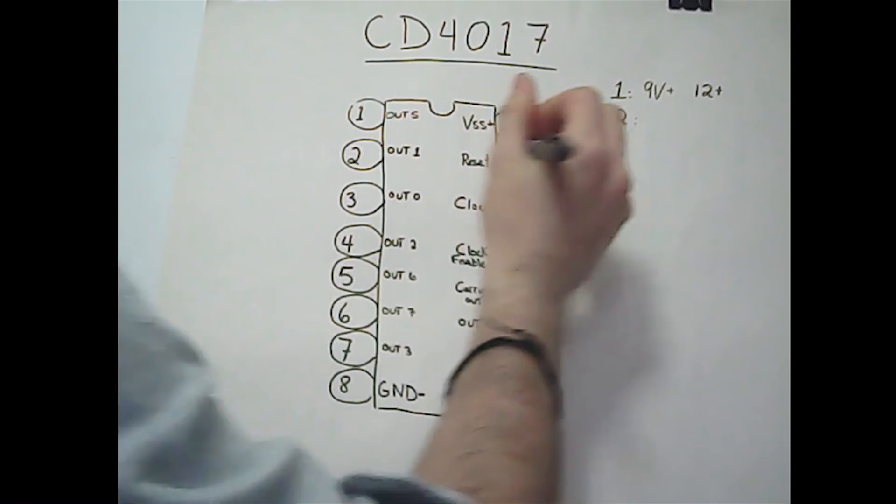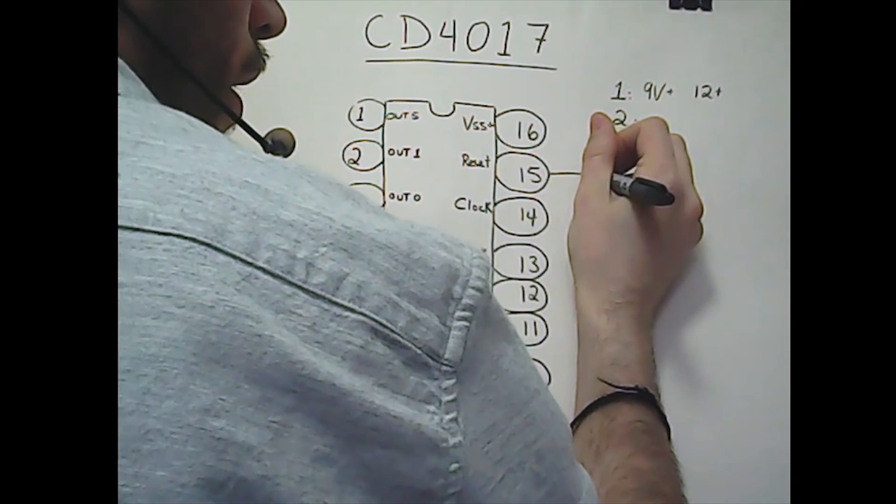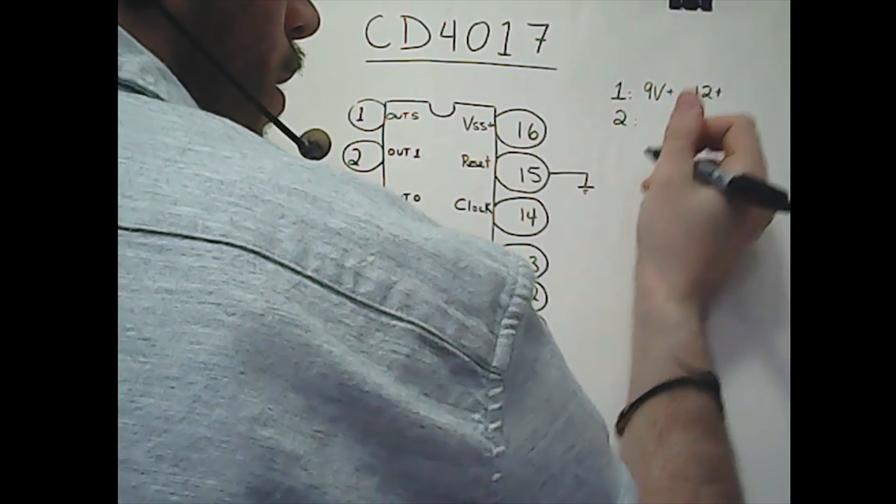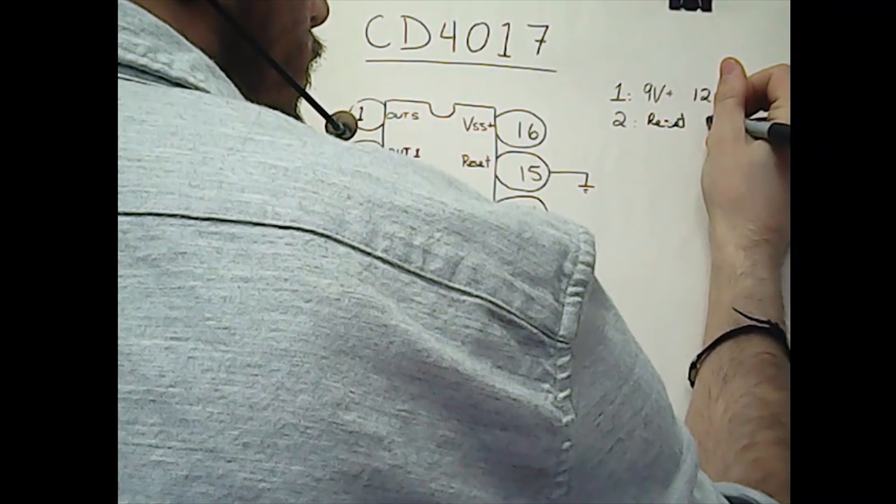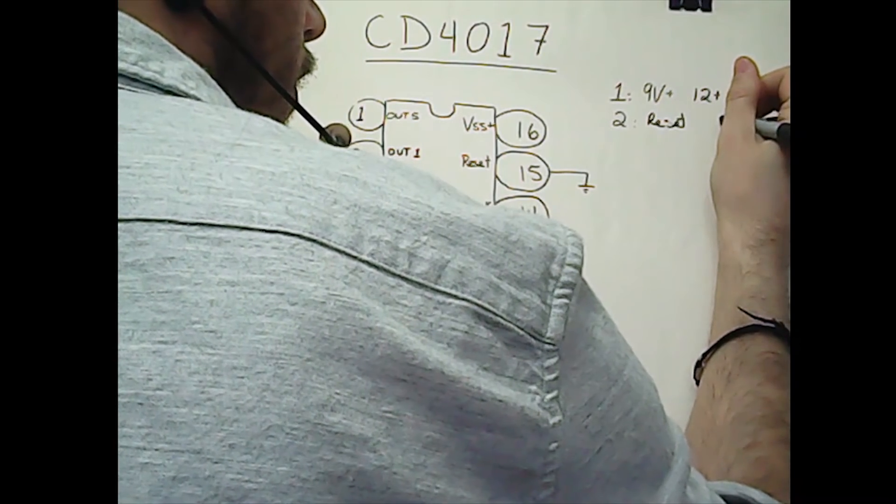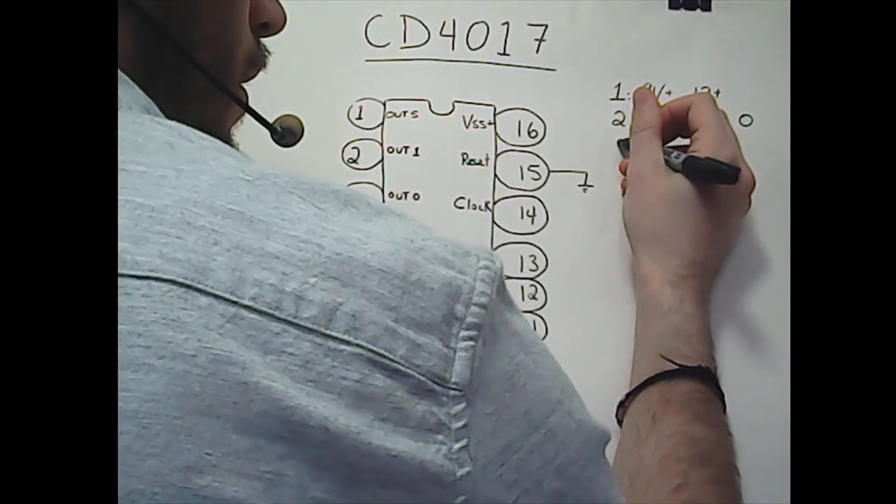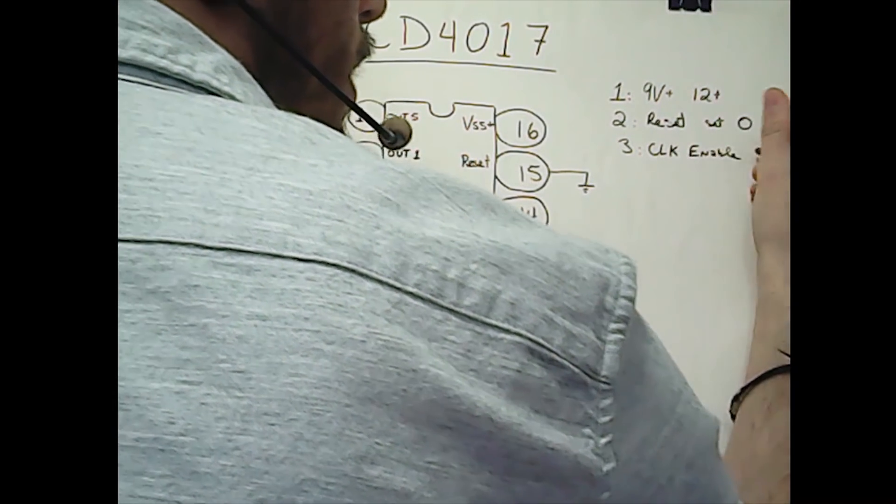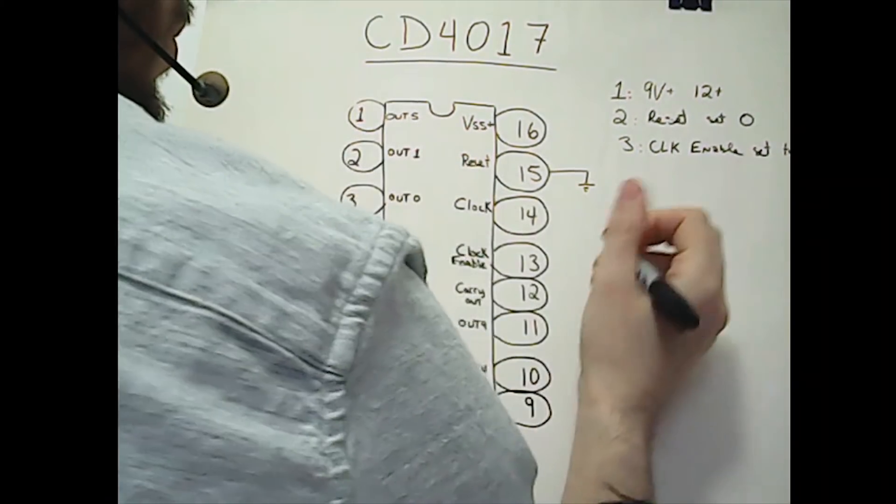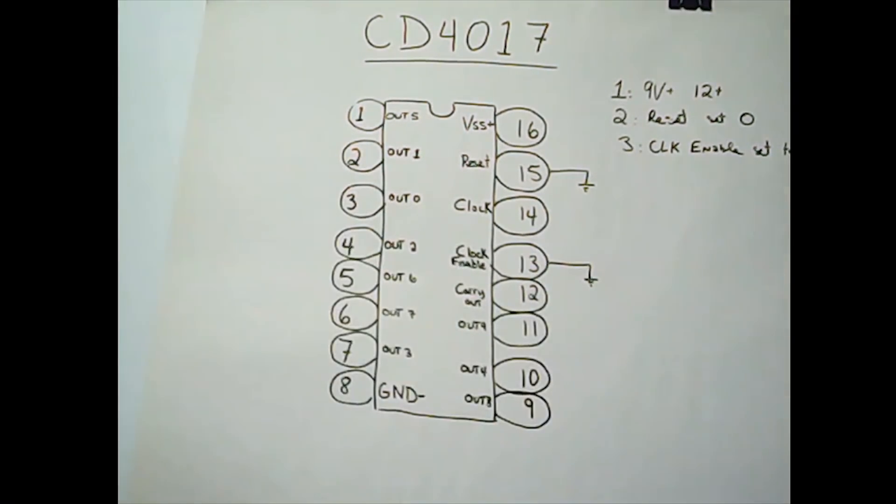Second condition is about the reset pin. In order to work, you must set it to the ground, or this IC will never start to count. Third condition is the clock enabled - set it to zero so your clock will be activated. Leave the carryout unplugged since we won't use it; that's pin 12.